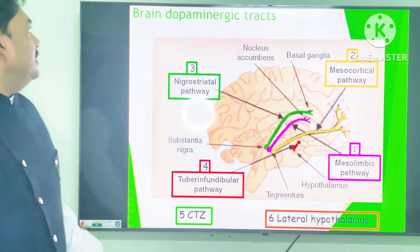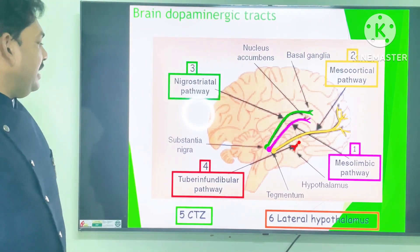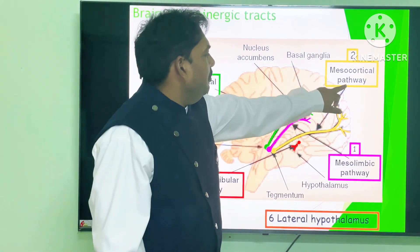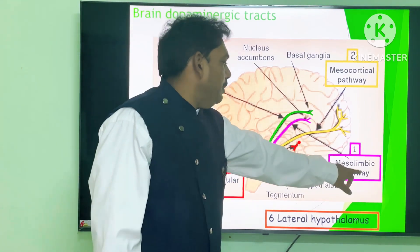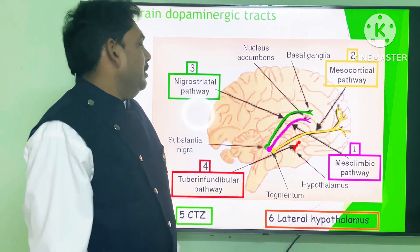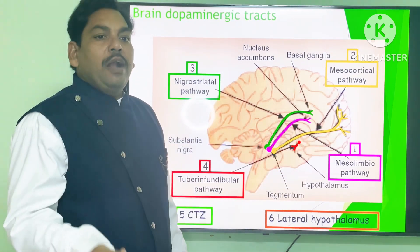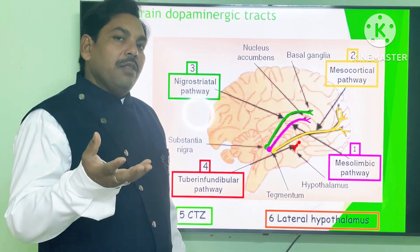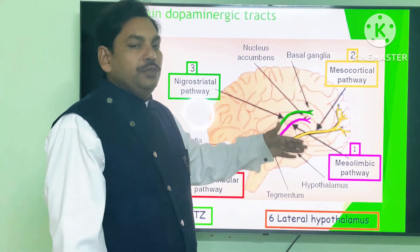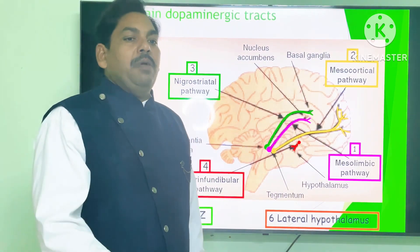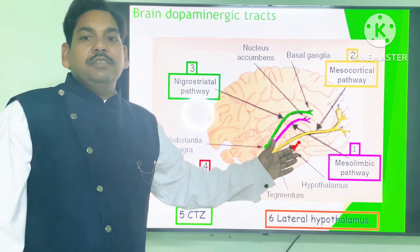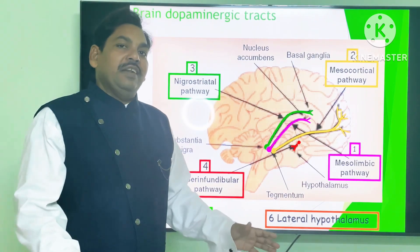This is the brain topology. The mesocortical and mesolimbic pathways are both required for a normal concentration of dopamine. If their concentration decreases or increases, it induces positive and negative symptoms of schizophrenia. This is all about the pathophysiology of psychosis. Thank you for your attention.